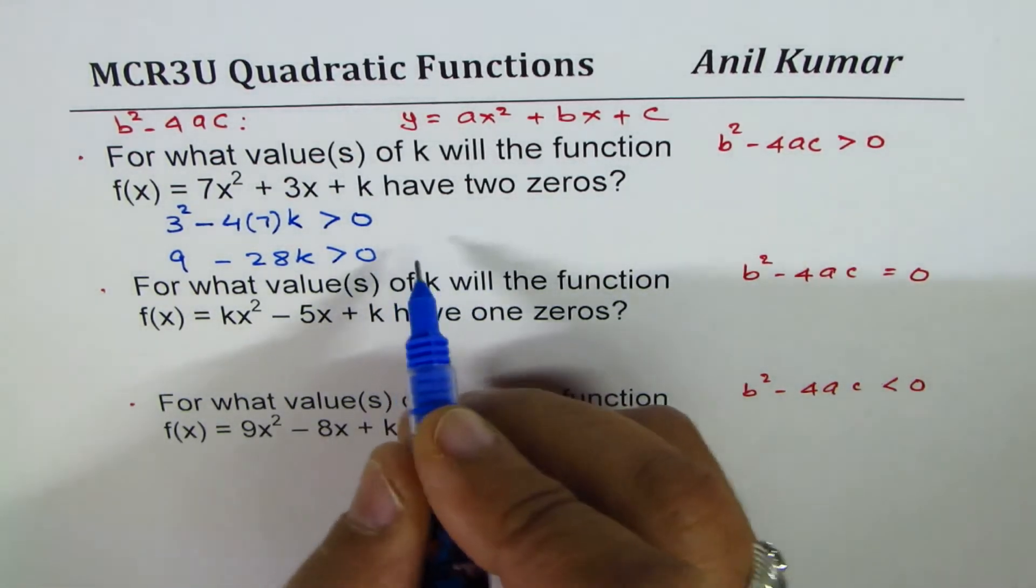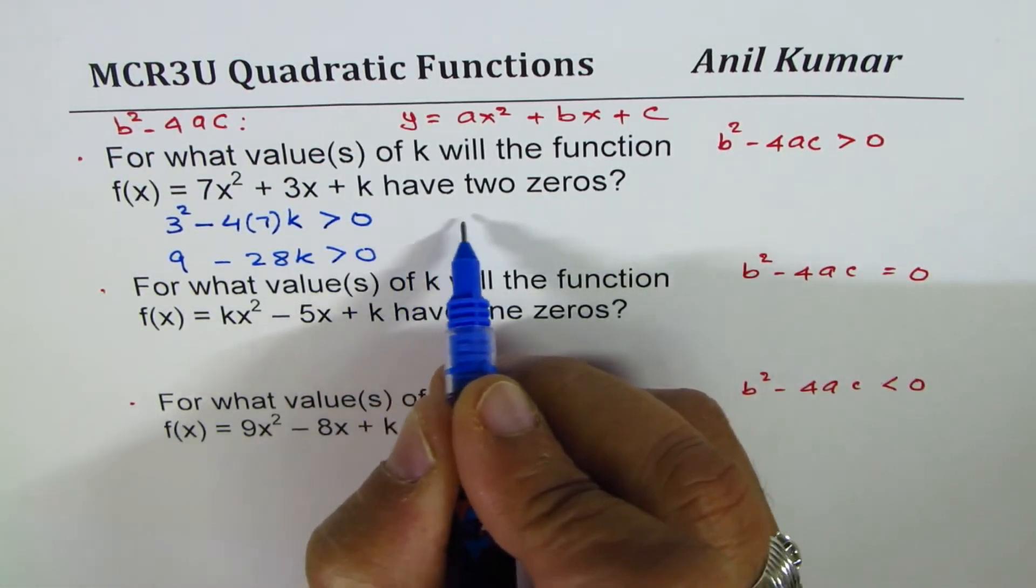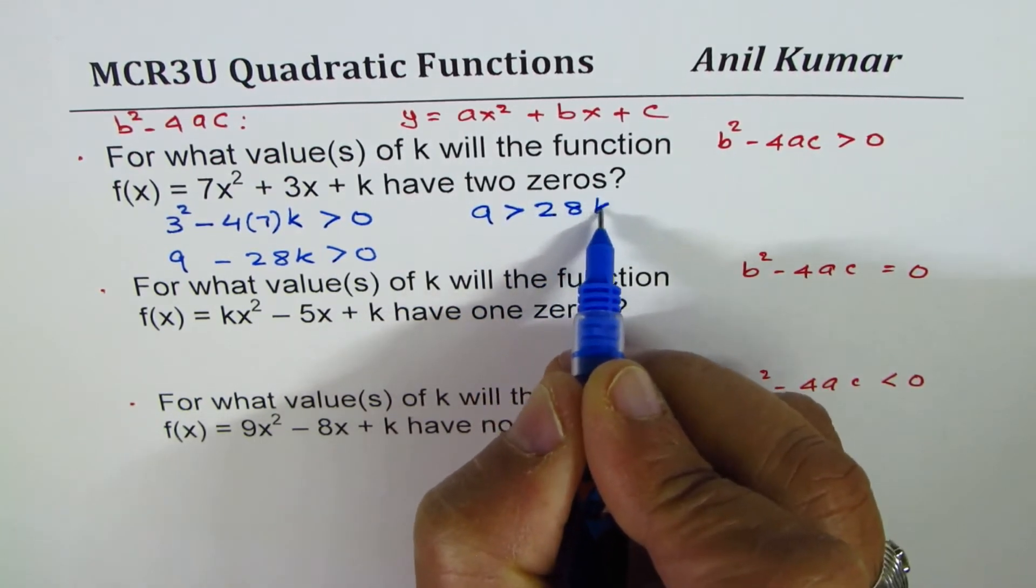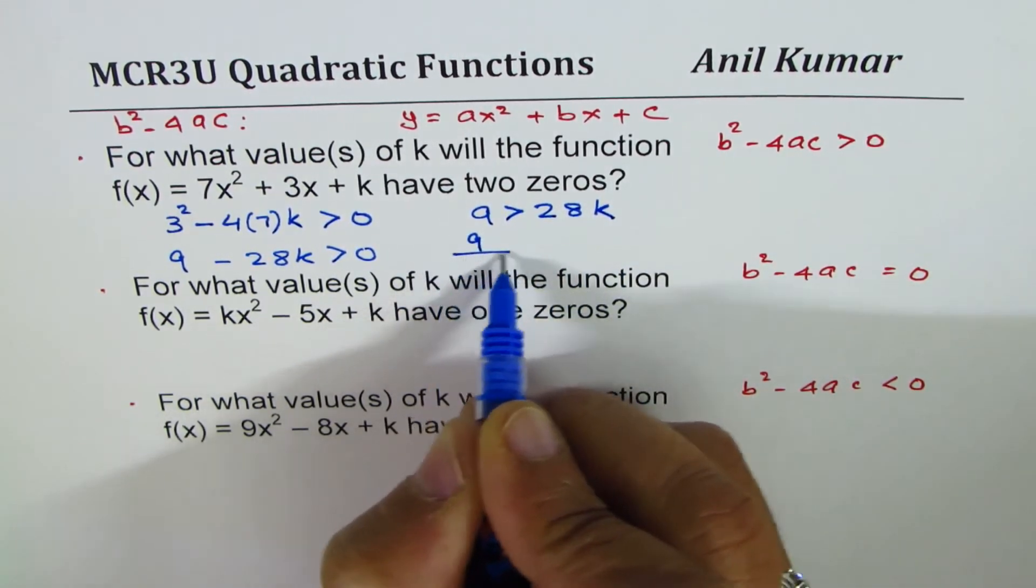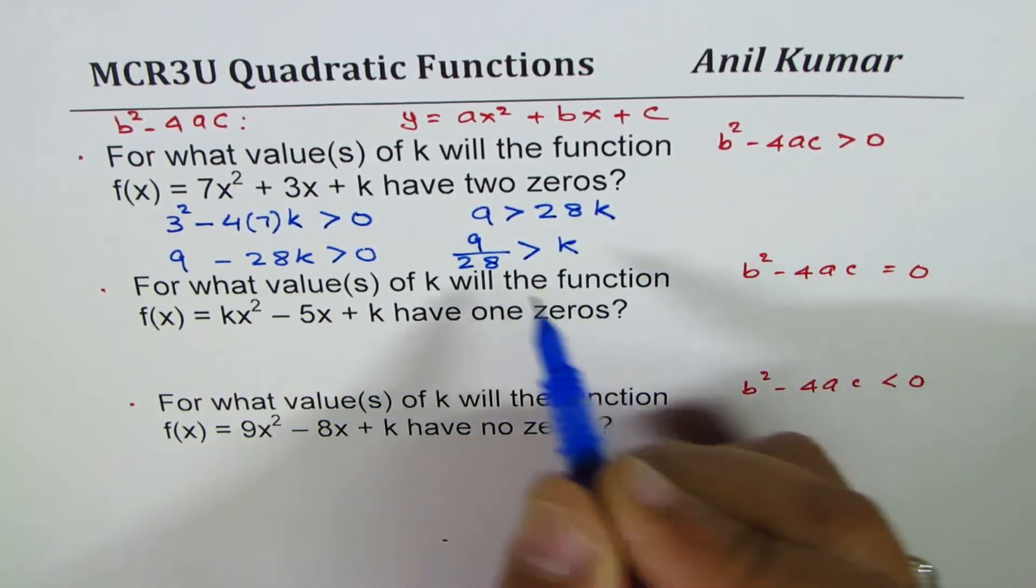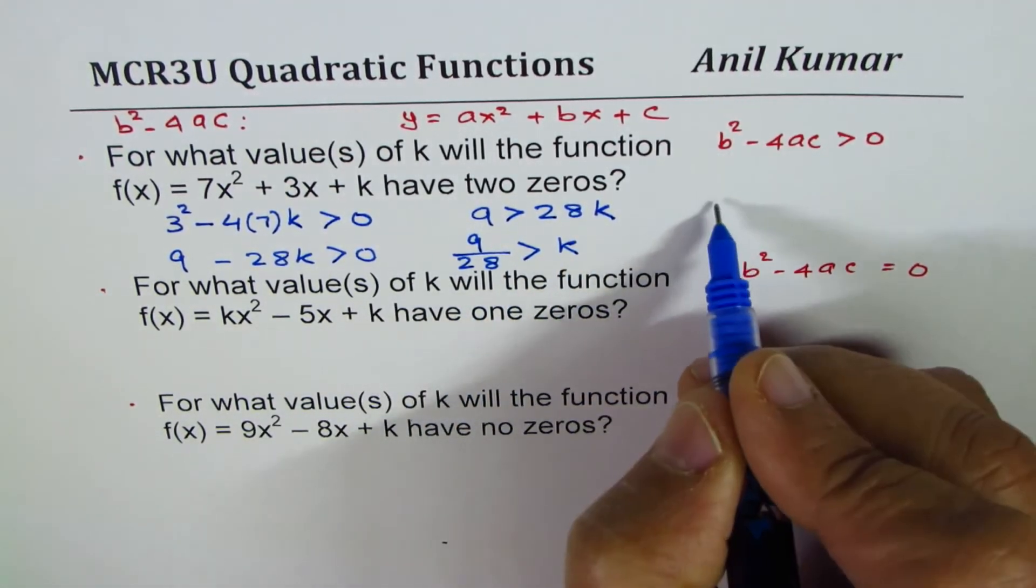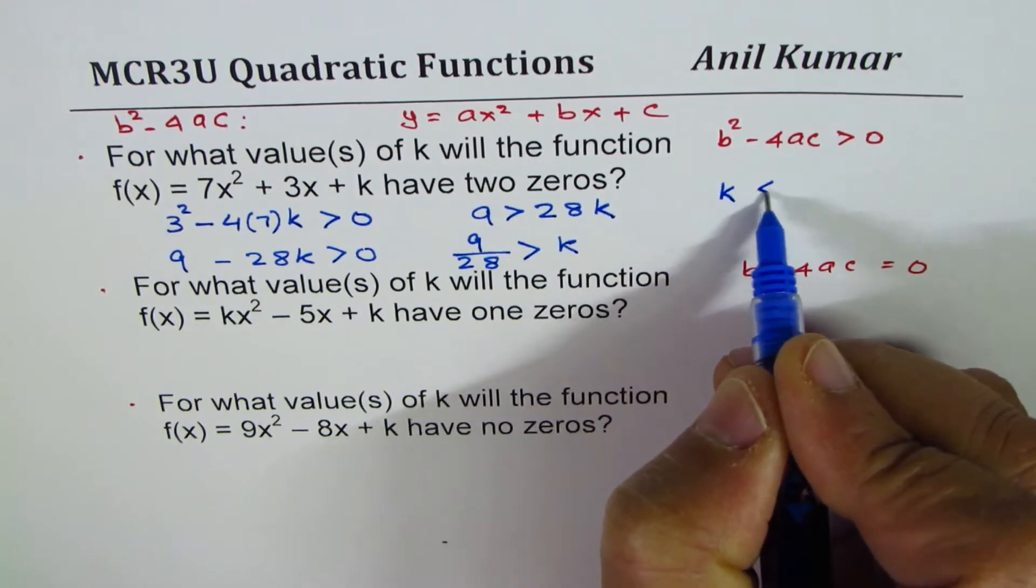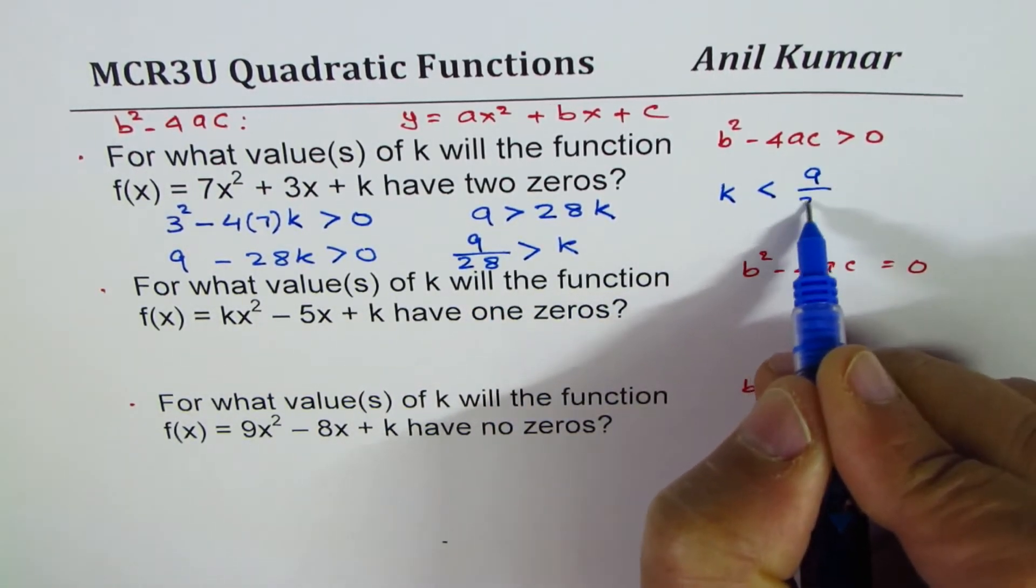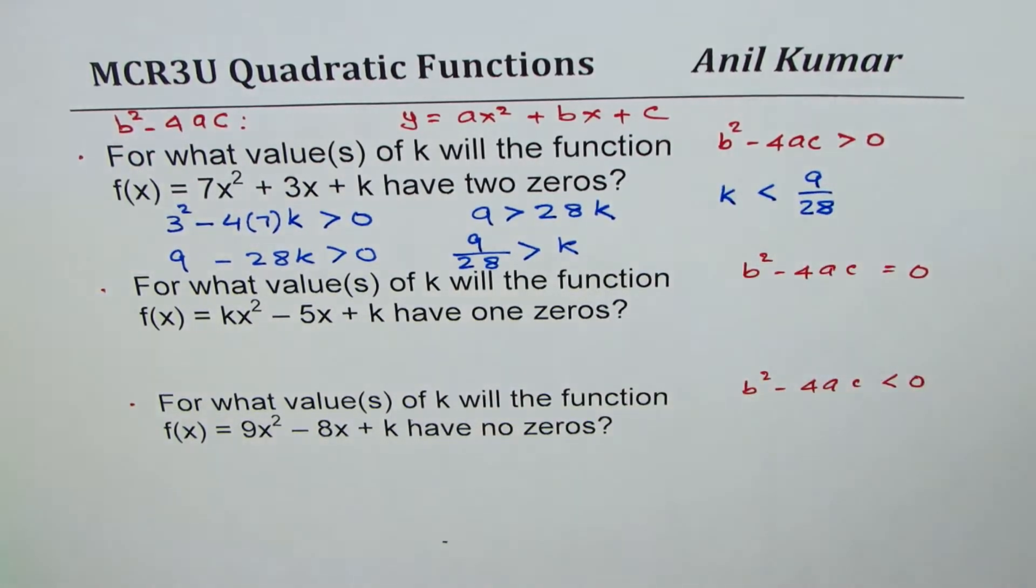Bringing 28 to this side we can say 9 is greater than 28k or 9 divided by 28 is greater than k. That is what you get. Or you can write your answer as k is less than 9/28. Perfect. There is no need to write in decimals.